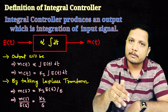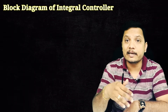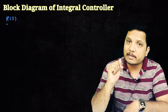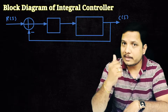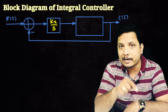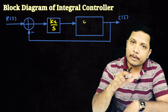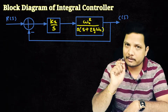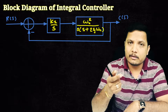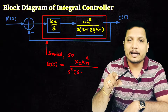Now let us understand this using a second order system. We consider the block diagram of a second order system with an integral controller in a negative feedback configuration. The integral controller block is Ki/s, and the second order system transfer function is ω_n² divided by s(s + 2ζω_n). These two blocks are in series.